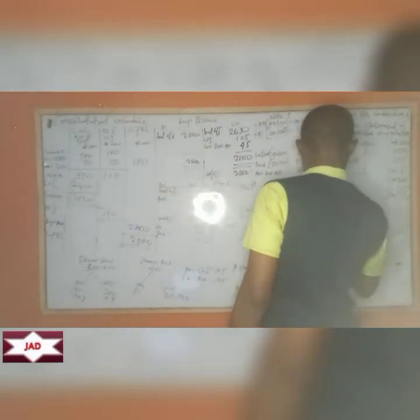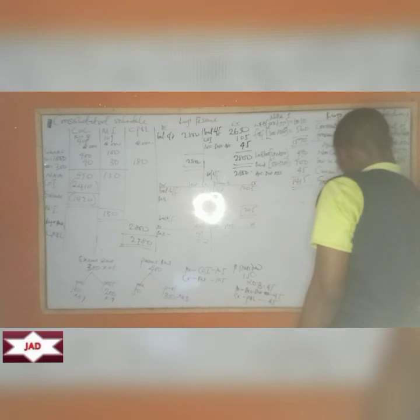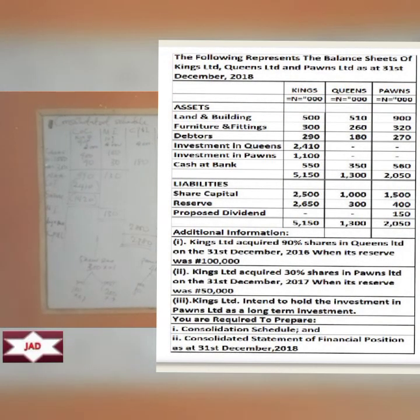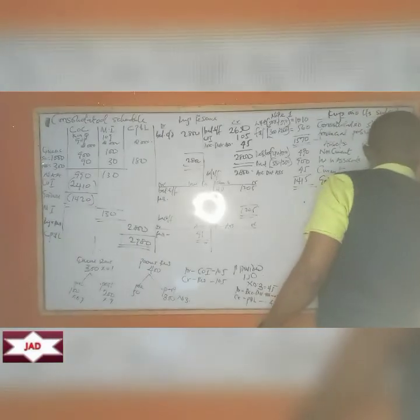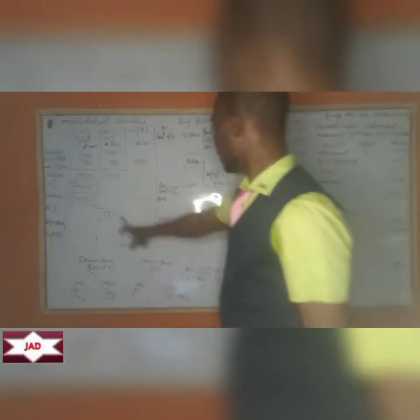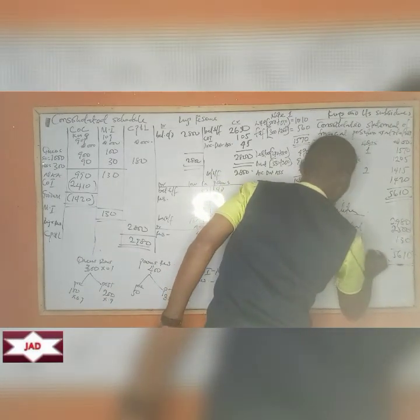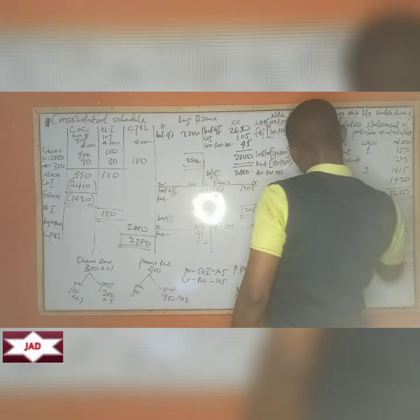On the liabilities side: Reserves = 2,980. Share capital of Kings = 2,500. Minority interests = 130. Total equity and liabilities = 2,980 + 2,500 + 130 = 5,610. This balances with total assets of 5,610.